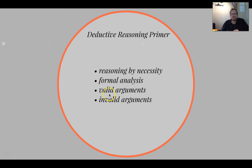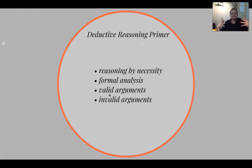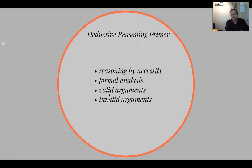This is linked to the question of valid arguments. A valid argument is any deductive argument in which, by virtue of its form, it is impossible for that argument to have true premises and a false conclusion. An invalid argument is an argument that can have true premises but a false conclusion. What that means is that if someone gives you an invalid argument, even if all their reasons are true — their evidence is true — the argument can still be false. That's what invalidity refers to: the potential for an argument to be false. Not that it necessarily is.